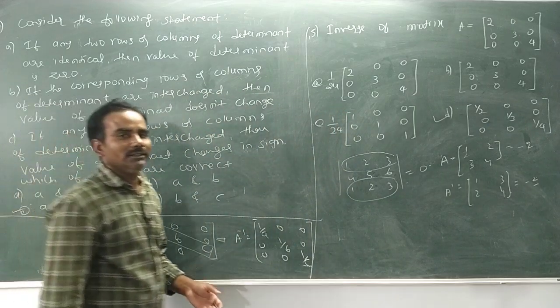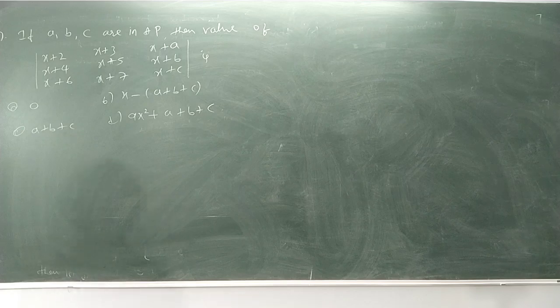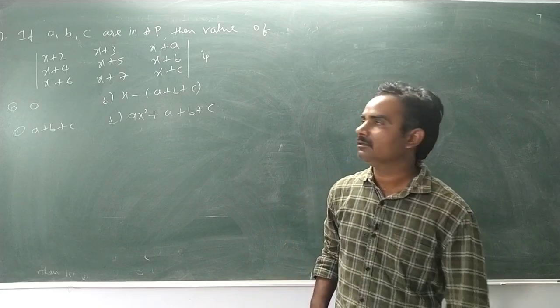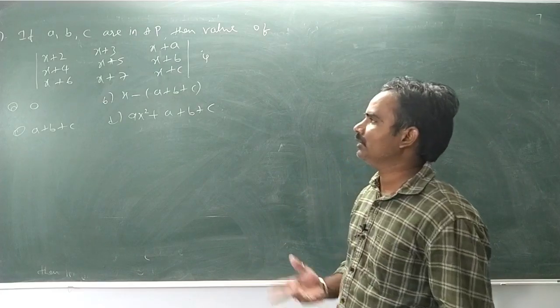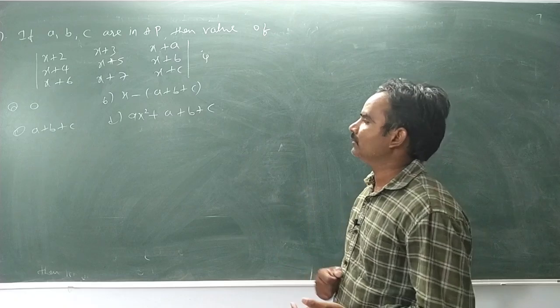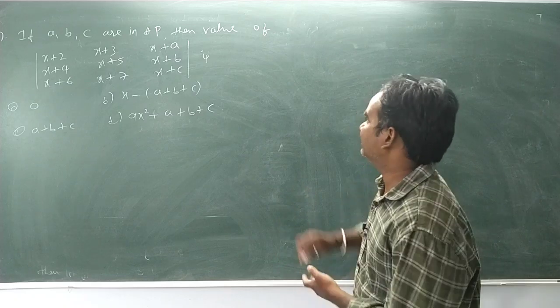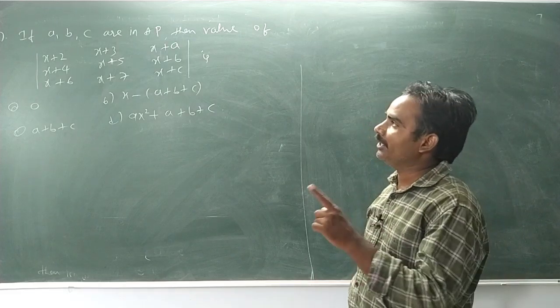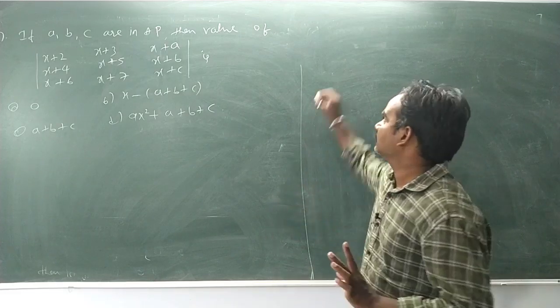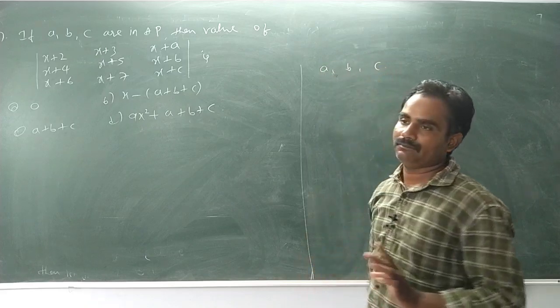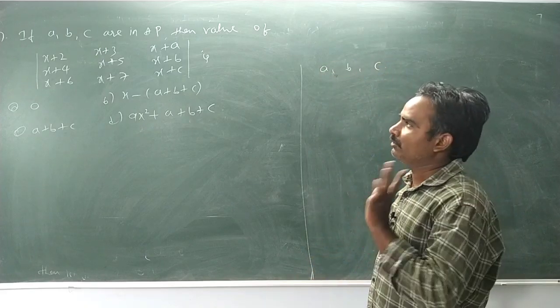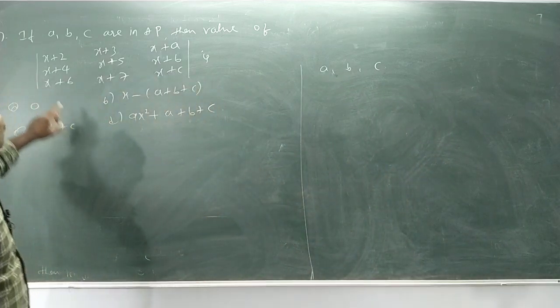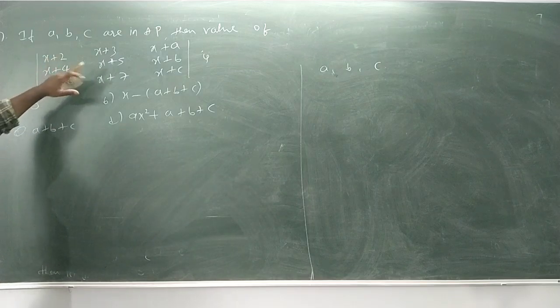Last problem: if A, B, C are in arithmetic progression, find the value of this determinant. He has given a clue: A, B, C are in AP. In arithmetic progression, observe the difference here is only plus 2, plus 2, plus 2. Comparing row 1 and row 2, and row 2 and row 3, the difference is 2.